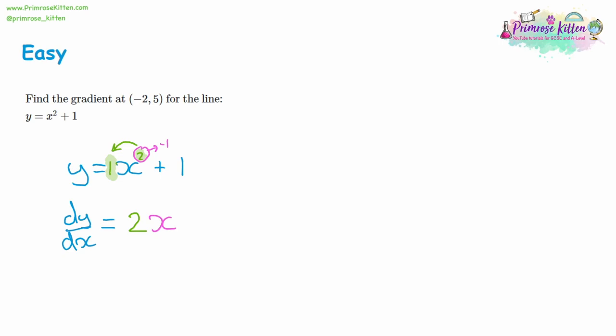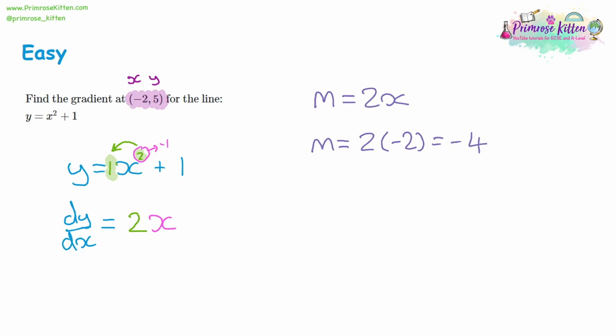The plus one is effectively one x to the power of zero — there are no x terms — so we multiply by zero and get zero, so it disappears. The gradient is therefore 2x. We now have an expression for the gradient, but we want to find the gradient at a specific point, which is at negative 2, 5. The x-coordinate is negative 2, so we substitute: two lots of negative 2 is negative 4. So at the point negative 2, 5 on the curve y equals x squared plus 1, the gradient is negative 4.